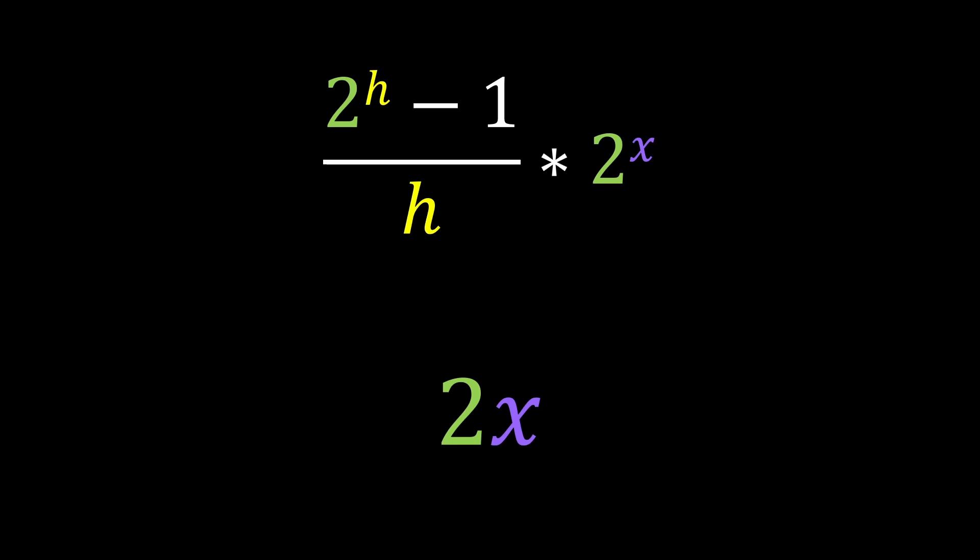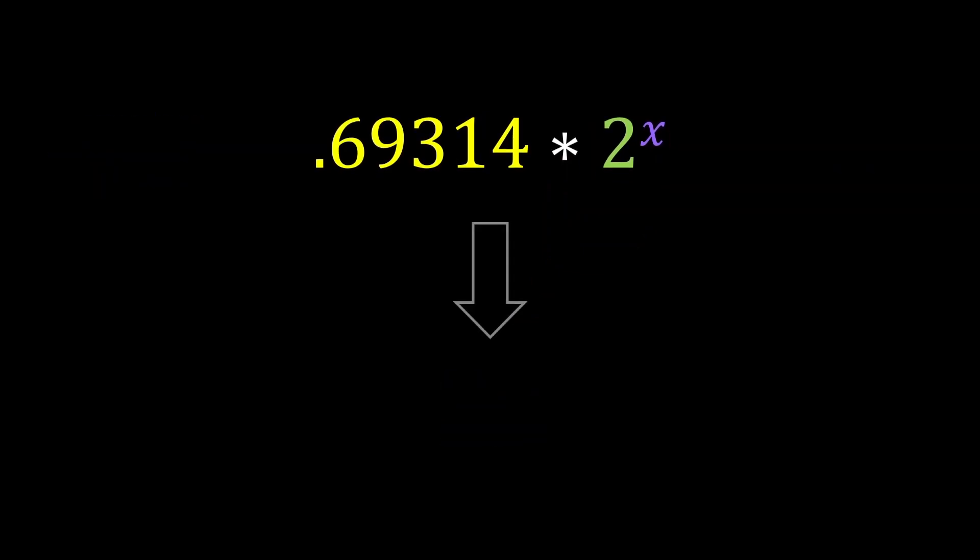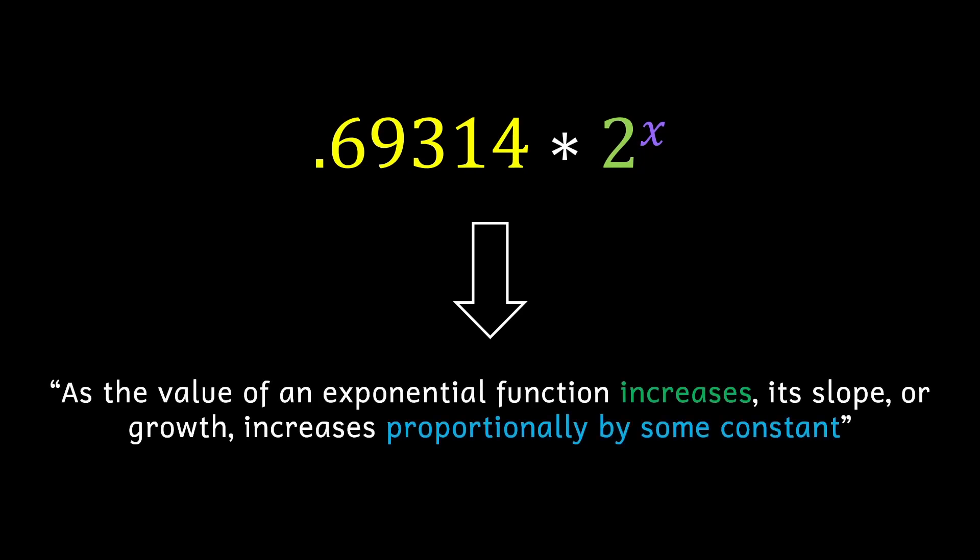What these new expressions tell us is that for our quadratic, its slope at any point is 2 times the x value of that point. But for our exponential function, its slope at any point is some constant times the y value of that point. If I were to translate that into a sentence, I would say: As the value of an exponential function increases, its slope or growth increases proportionally by some constant.